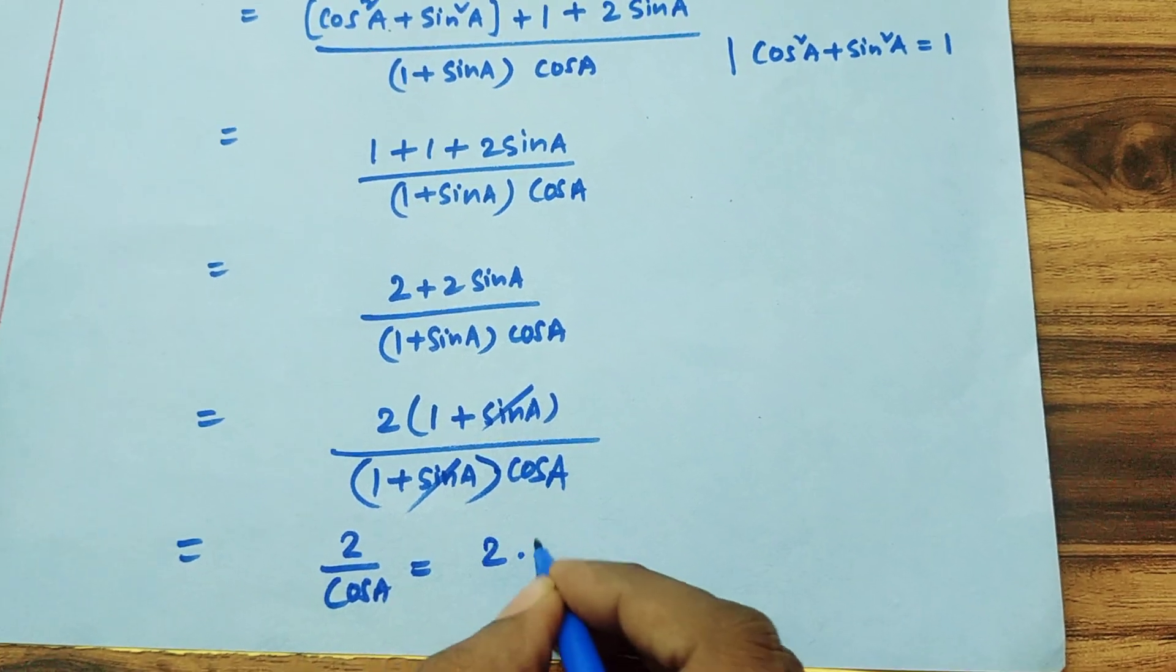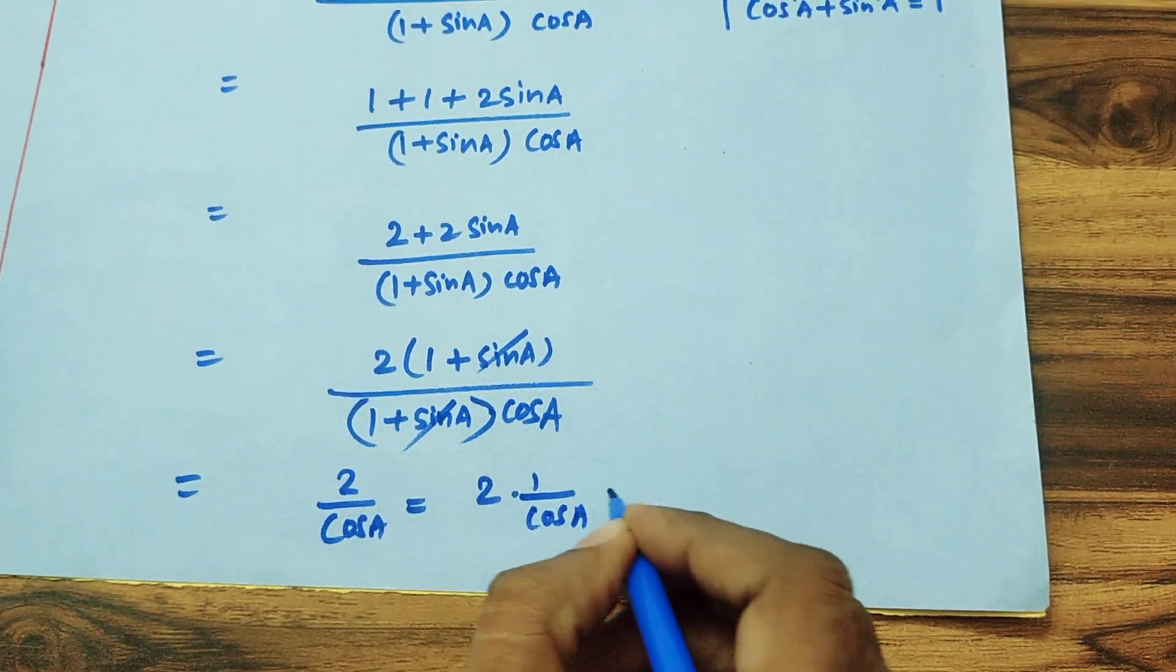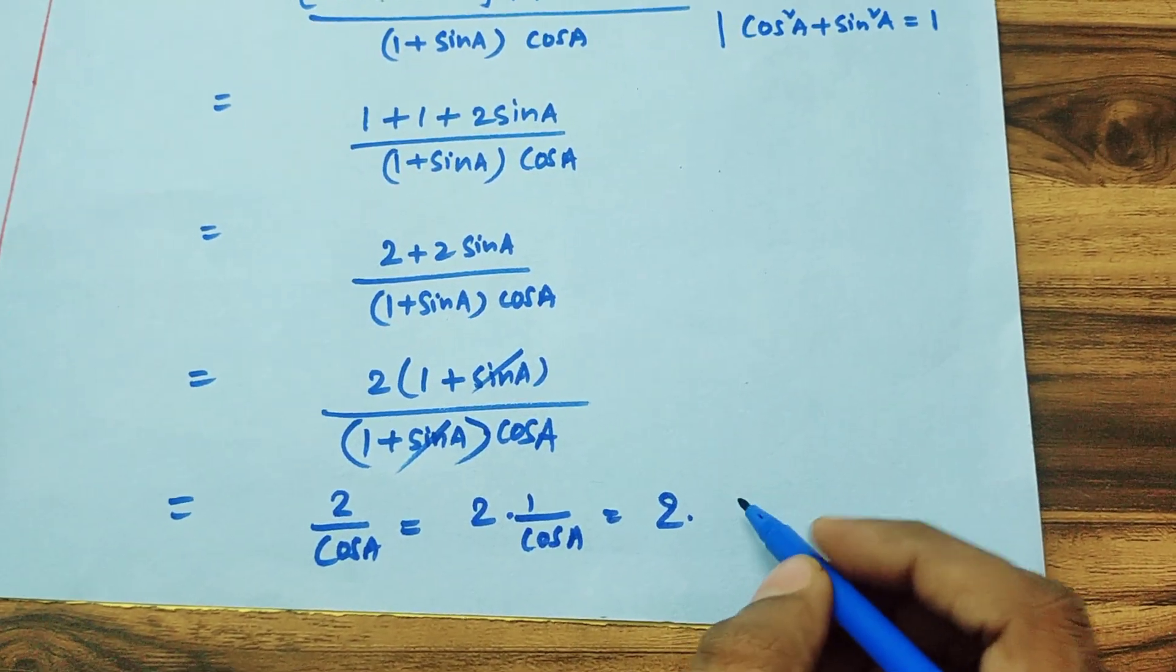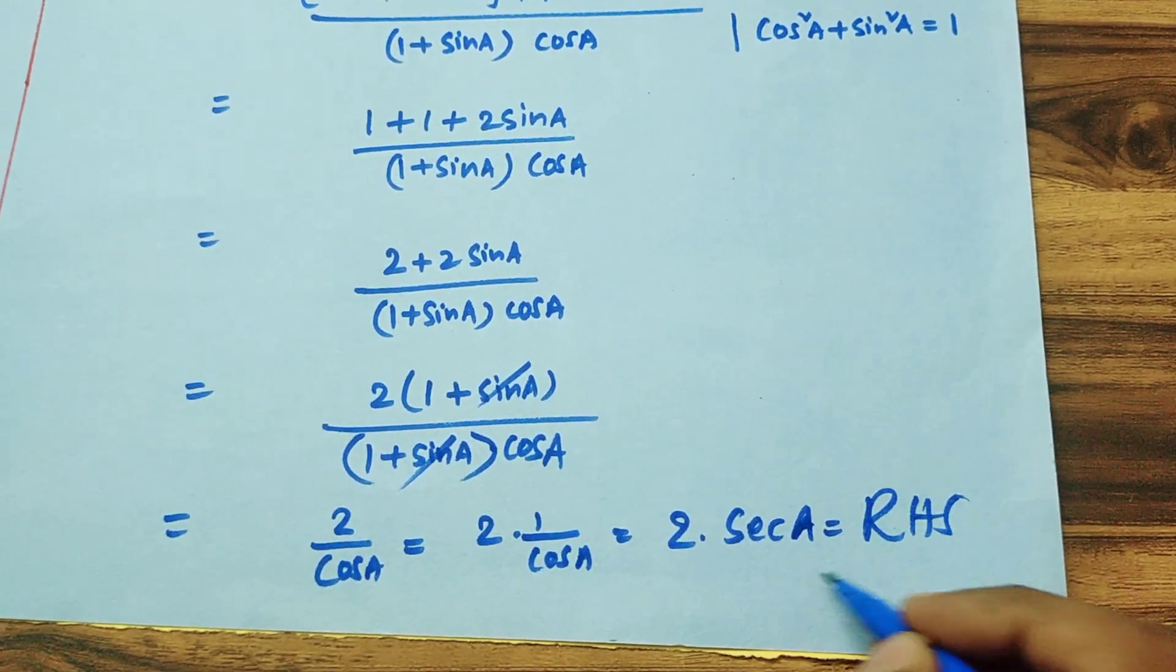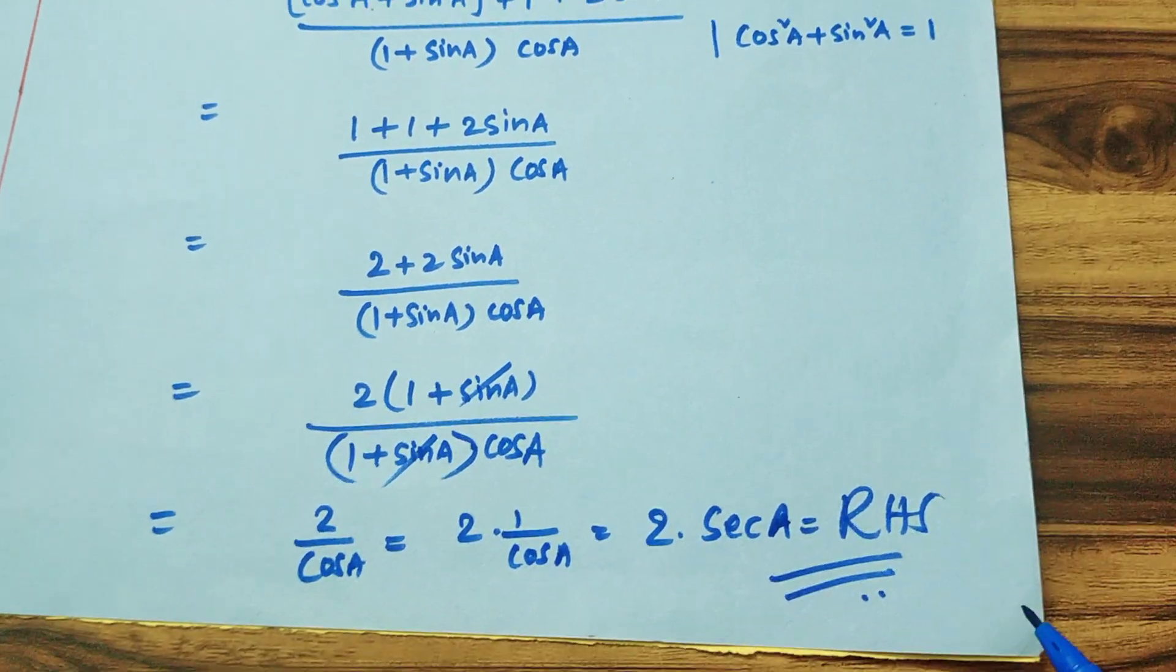It is nothing but 2 into 1 by cos A, which is nothing but we know that 1 by cos A is secant A. So this is RHS. This is what we have to prove. Thank you.